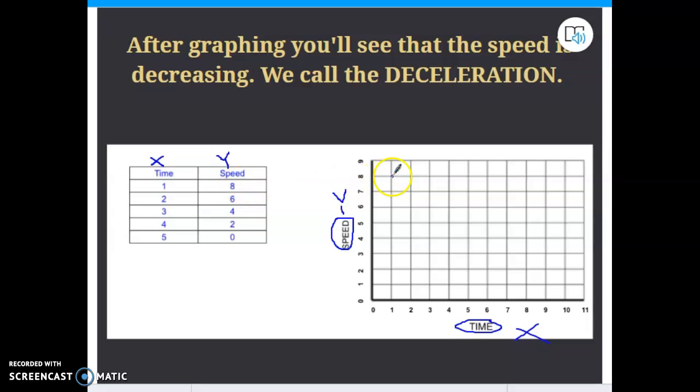At one, we were going eight miles an hour. At two, we were going six. Three, four. Four, two. And five, zero. Time for the handy dandy line drawer. Now, I have plotted the data.